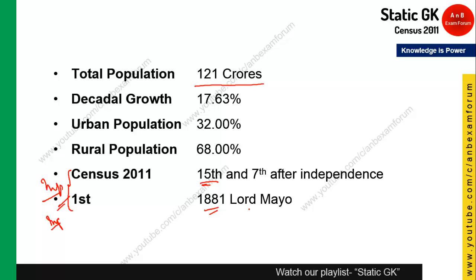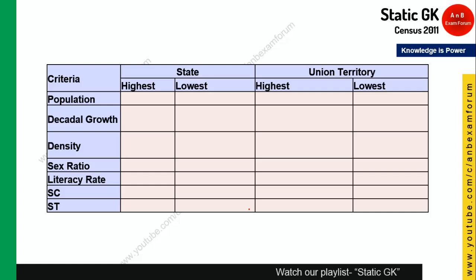Coming to important pointers by criteria: which state has the highest and lowest population, which union territory has the highest and lowest population, which state has the highest and lowest decadal growth rate, and which state has the highest and lowest density. Take a screenshot of this table and memorize it, as this is a static part you need to cram.